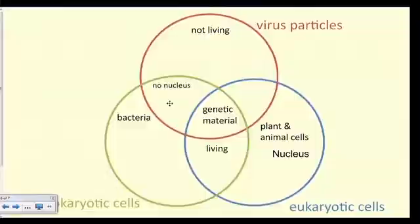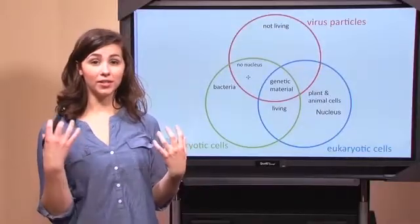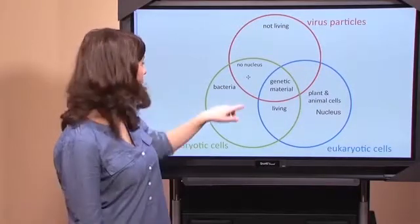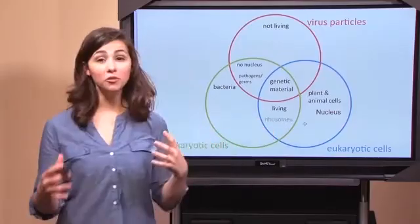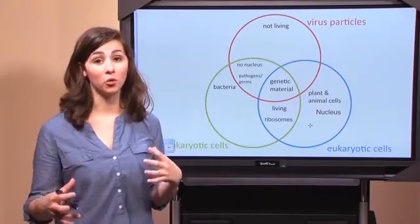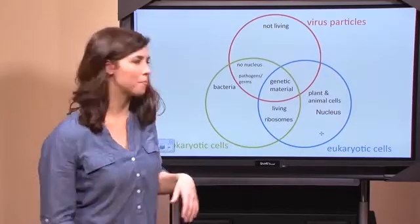We can also say that virus particles and bacteria are both pathogens because prokes are sometimes germs. Alright, we can also say that prokes and eukes both have ribosomes, but only eukaryotic cells have membrane-bound organelles. You know, cell parts with their own membranes.